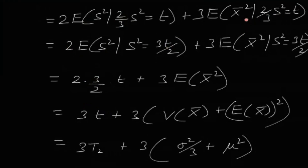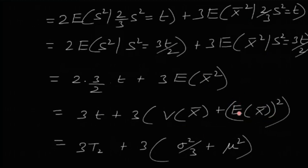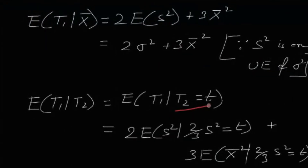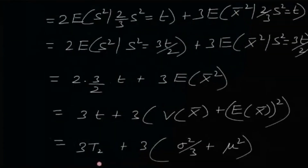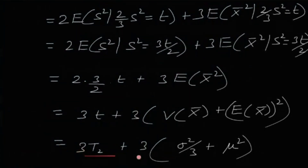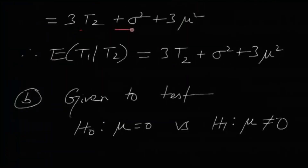For the second term: since S² and x̄² are independent, E[x̄² | (2/3)S² = T] = E[x̄²] = Var(x̄) + (E[x̄])² = σ²/3 + μ². So the full expression becomes 3·(σ²/3 + μ²) = σ² + 3μ². Replacing T with t2, E[t1 | t2] = 3t2 + σ² + 3μ².